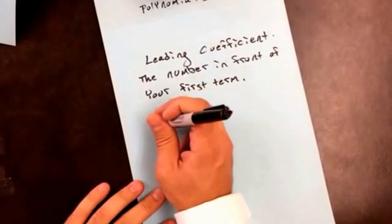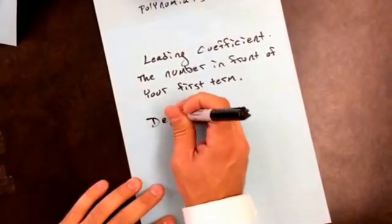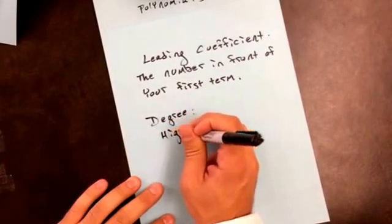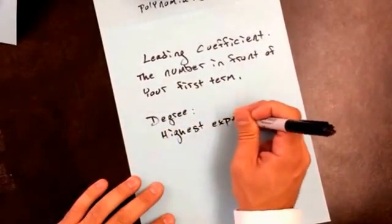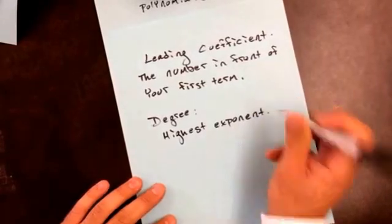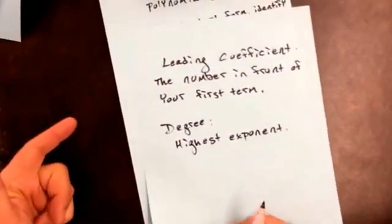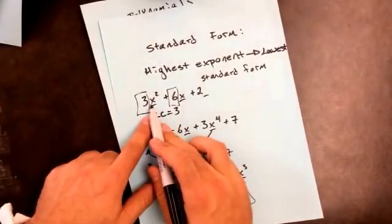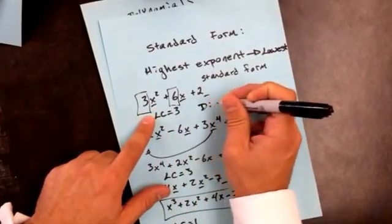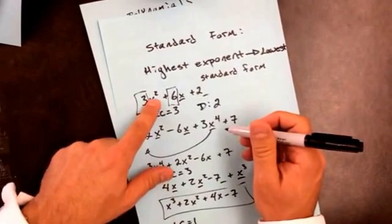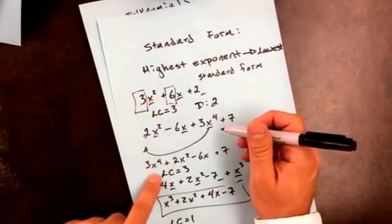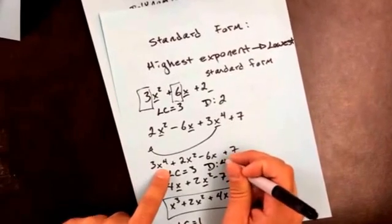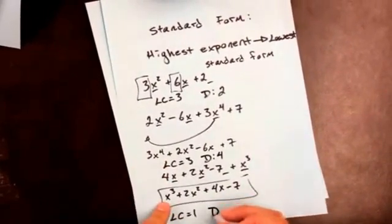They'll also ask for the degree, which is the highest exponent. When it's in standard form, it's the exponent of your first term. So the degree of this first polynomial is 2. This one's degree is 4, because I have an exponent of 4. And this one has a degree of 3.